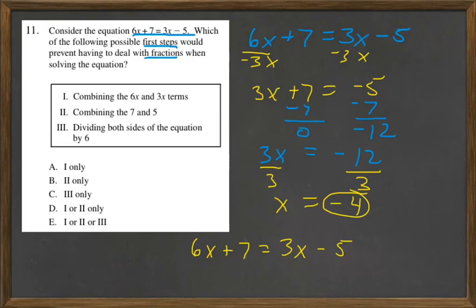I can already tell that this is going to start making some fractions. Let's just do the first part of it here. If I divide this by 6, this by 6, I can already see that I'm going to get 1x because 6 divided by 6 equals 1. And then 7 divided by 6 is going to end up being plus 7/6.